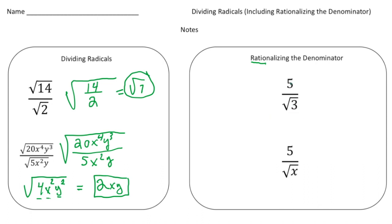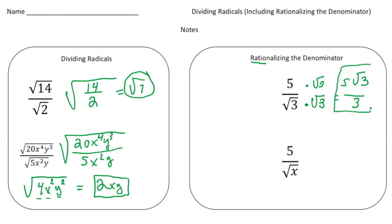For example, here we have 5 over the square root of 3. The square root of 3 is irrational because this number as a decimal goes on forever, and you can't have that as a denominator in a fraction. So the way you fix this is you multiply both the numerator and denominator by the denominator — the square root of 3. The numerator becomes 5 radical 3, and in the denominator, the square root of 3 times the square root of 3 is the square root of 9, which is 3. The whole point of rationalizing is to get rid of the irrational part in the bottom.